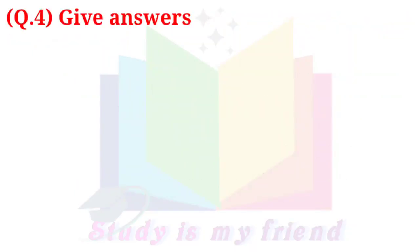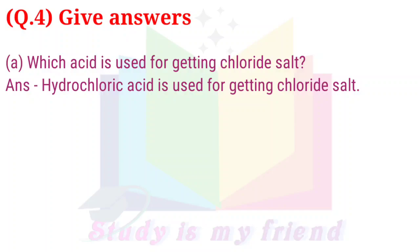Question 4: Give answers. A. Which acid is used for getting chloride salt? Answer: Hydrochloric acid is used for getting chloride salt.